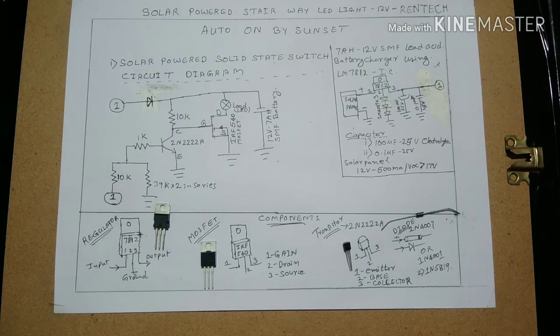For the charging circuit we would be using a 7812 charger. Ideally the 7812 charger would not be able to charge a 7Ah 12 volt sealed maintenance free battery because the battery needs a cyclic voltage of 14.1 to 14.4 volts.